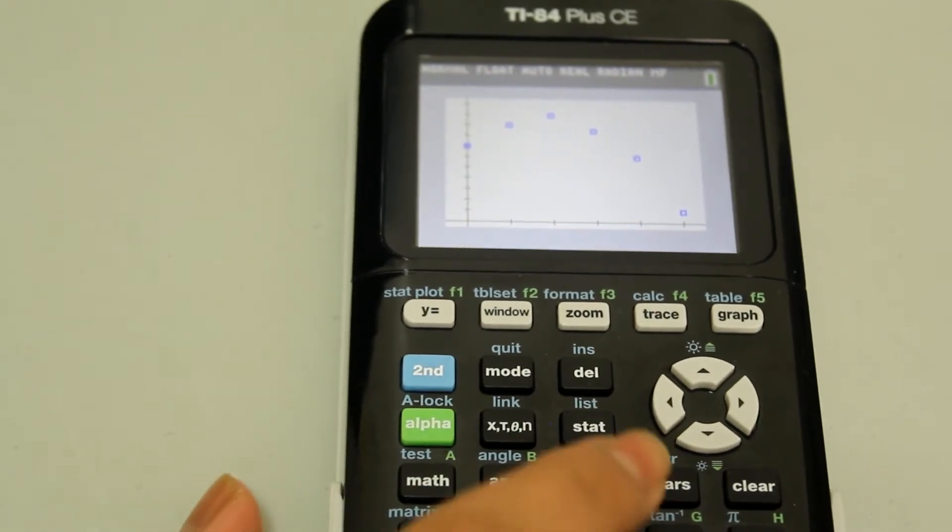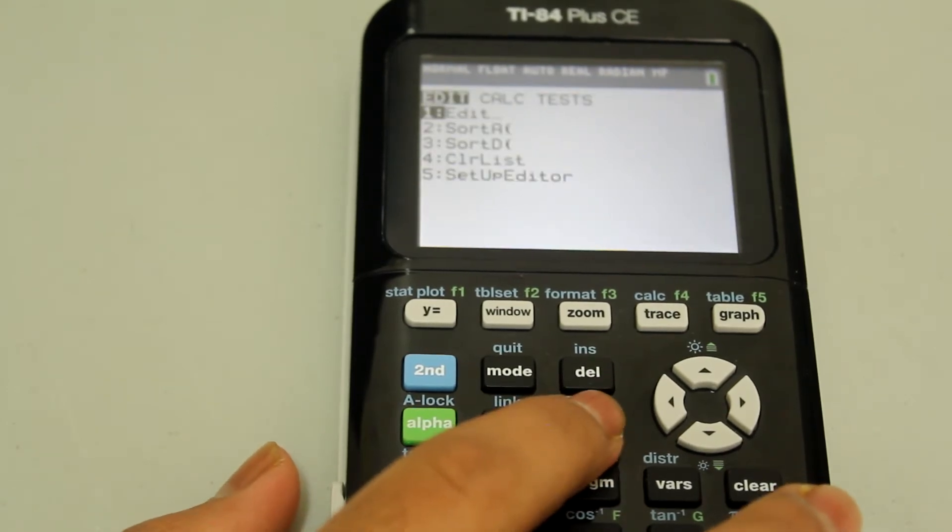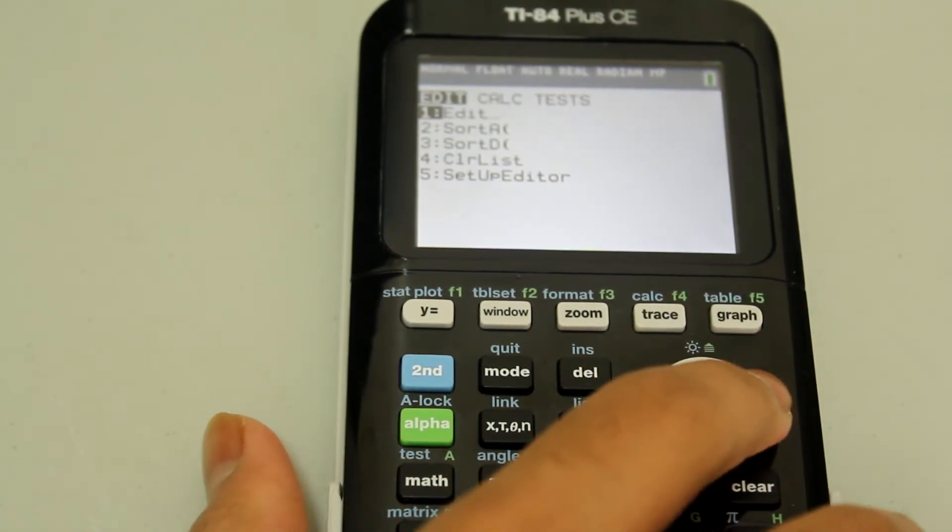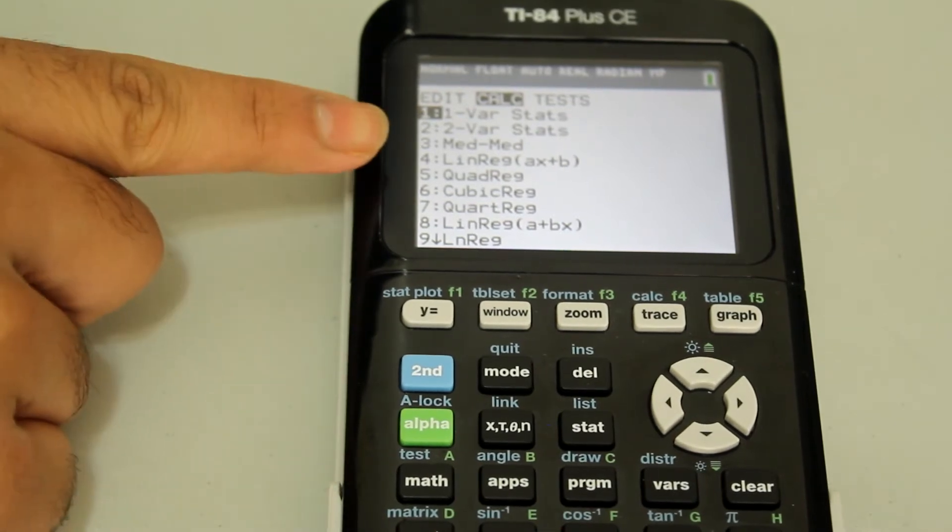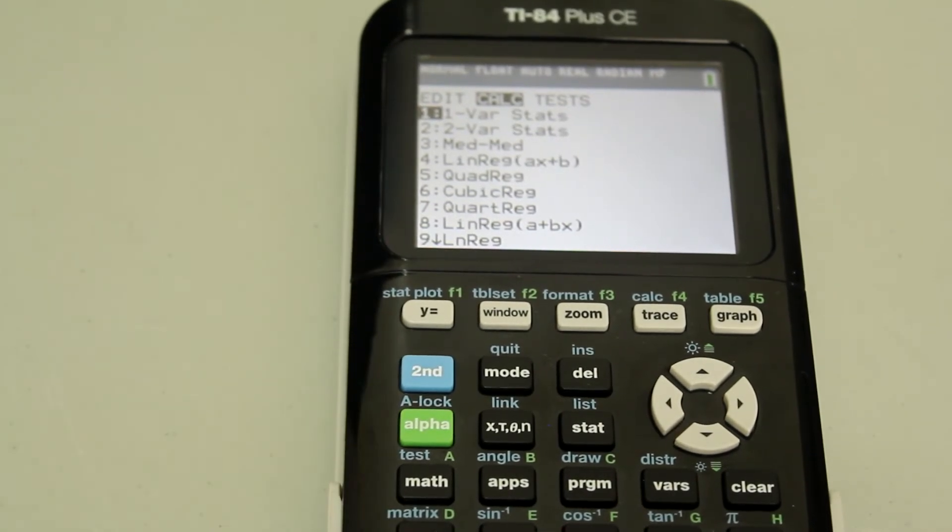In order to do that, we're going to go into stat again, hit the right arrow and go over to calc, select quadratic regression using the number five button.